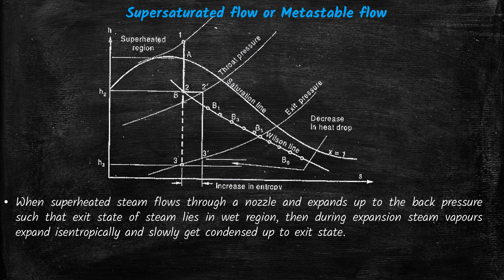In steam nozzles, the flow we assume is isentropic. Now in this hs diagram shown here, you can see that a flow is taking place isentropically from point 0 through A, B, and at point 3. The flow from 1 to 3 is considered isentropic because the entropy remains constant throughout this flow.